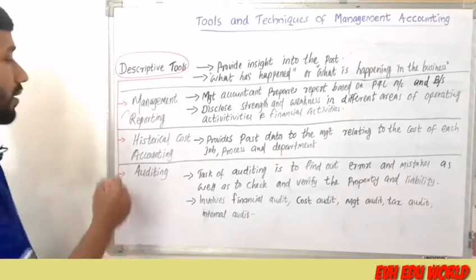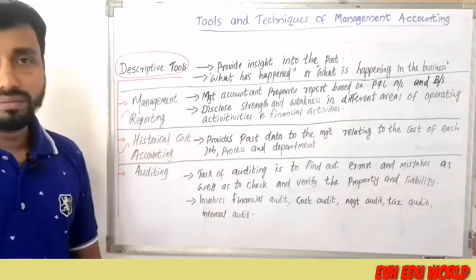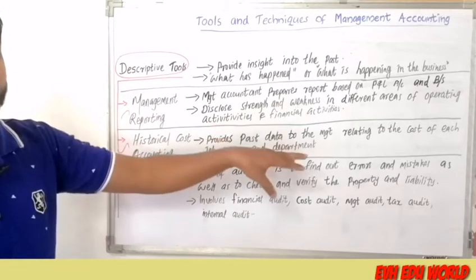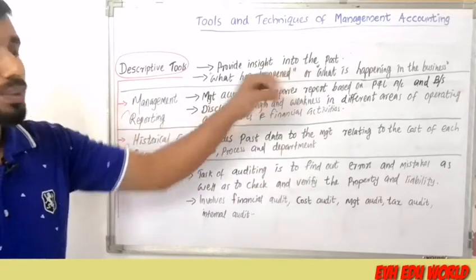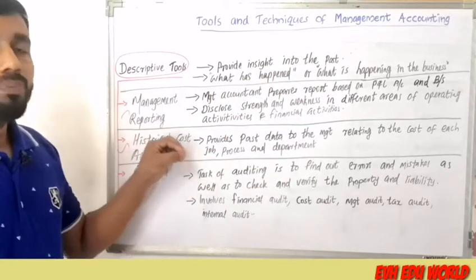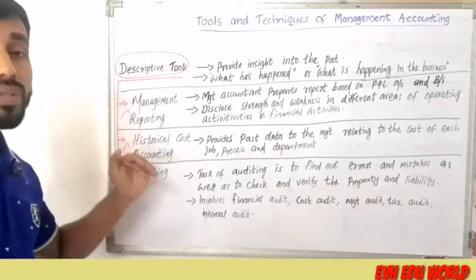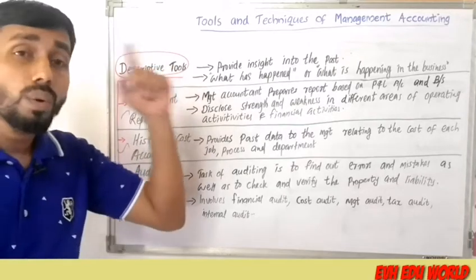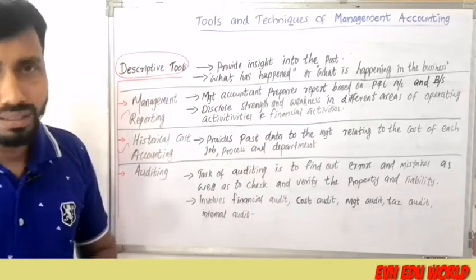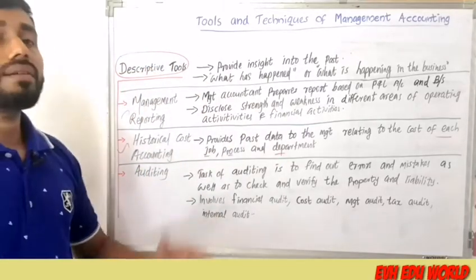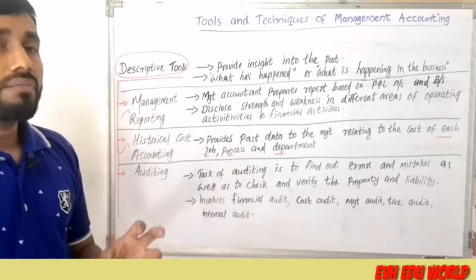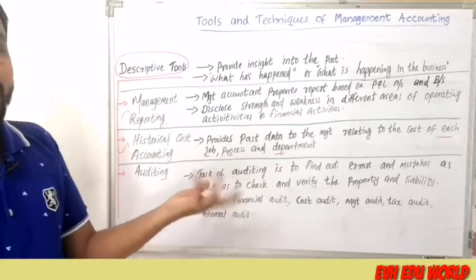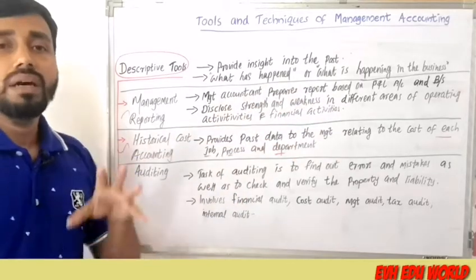The second descriptive tool is historical cost accounting, which provides past cost data to the management relating to the cost of each job, process, or department. This past cost data can be compared to find deviations and help management with cost control.